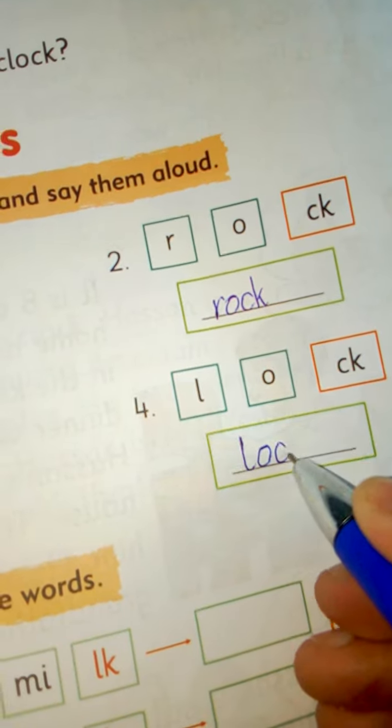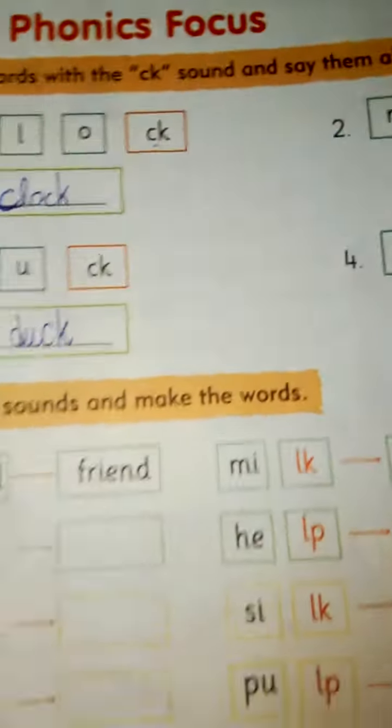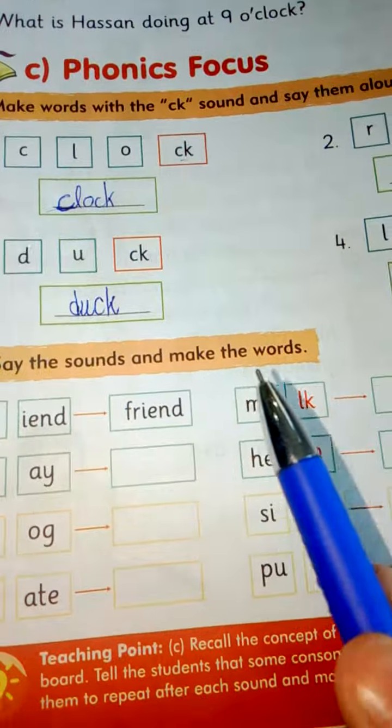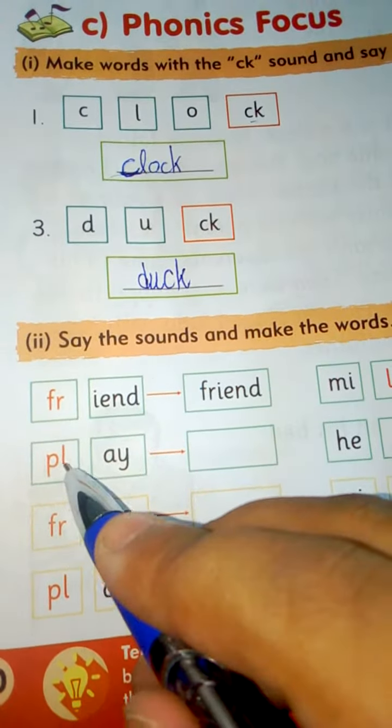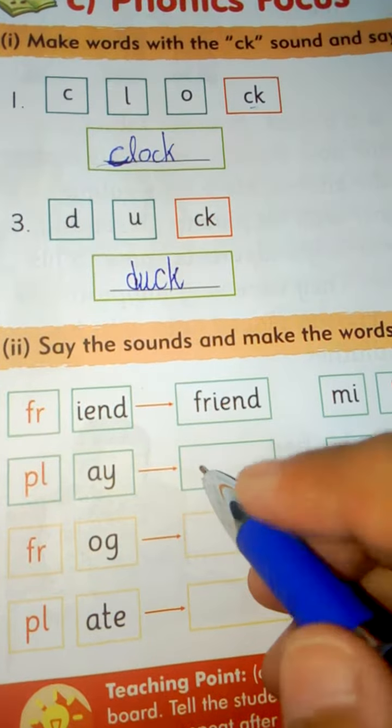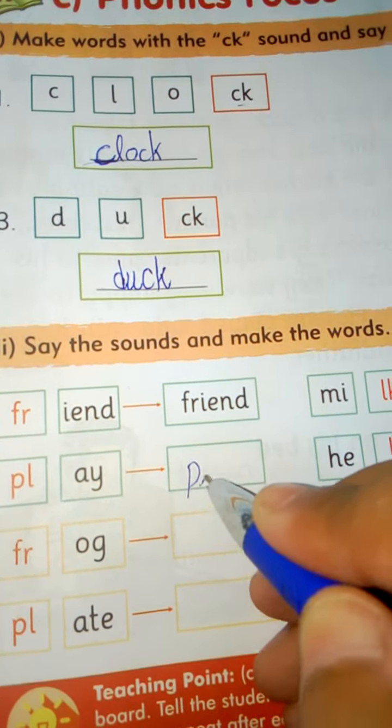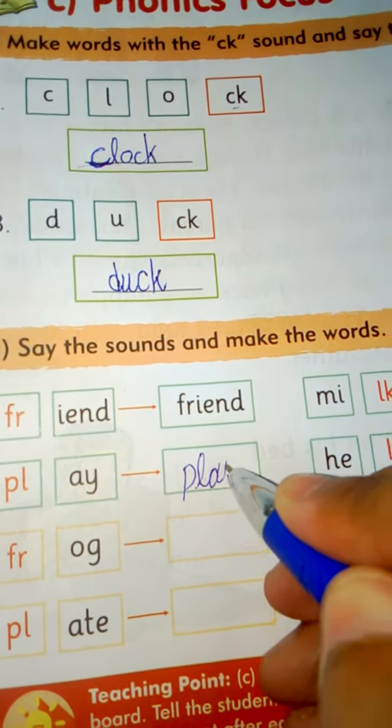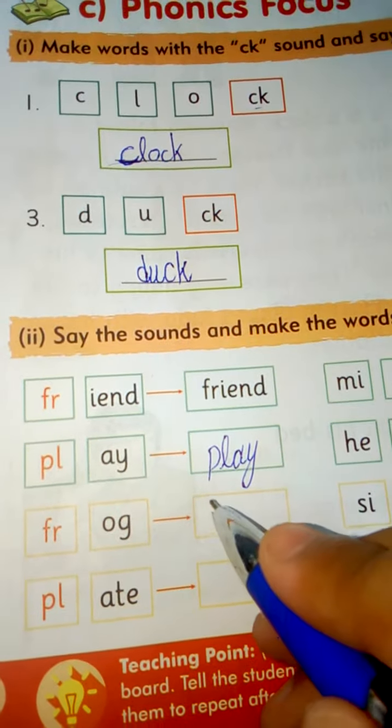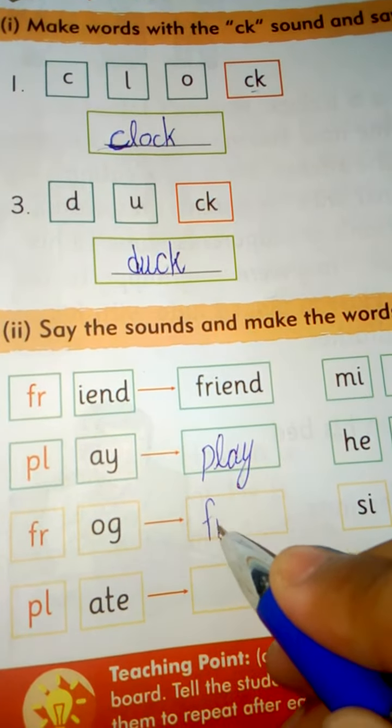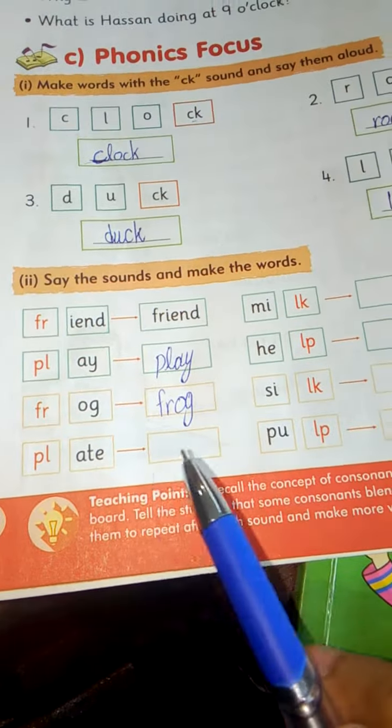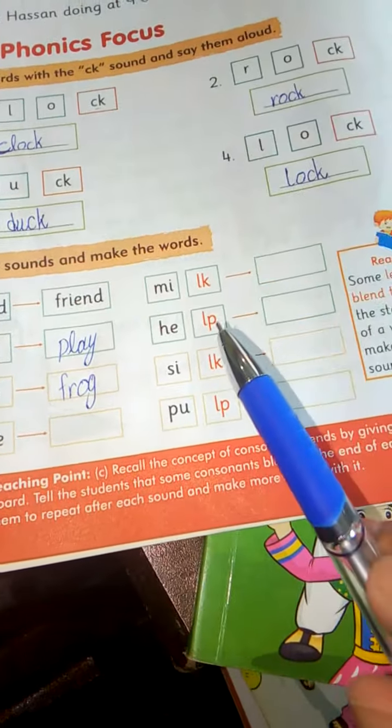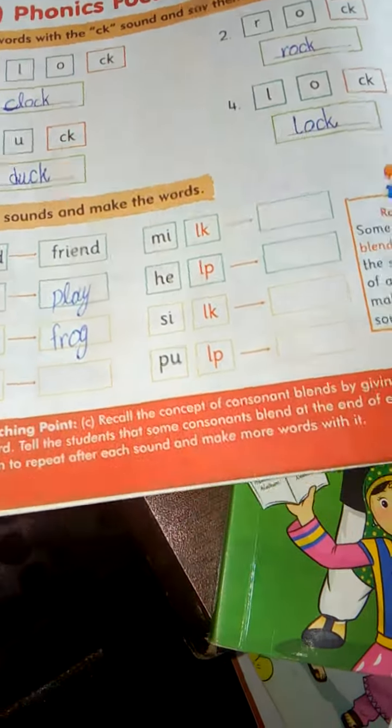And here, say the sounds and make the words. We will write down these words here like it's play, play, play. Frog, frog. We will write this same as like plate, milk, help, silk, pulp.